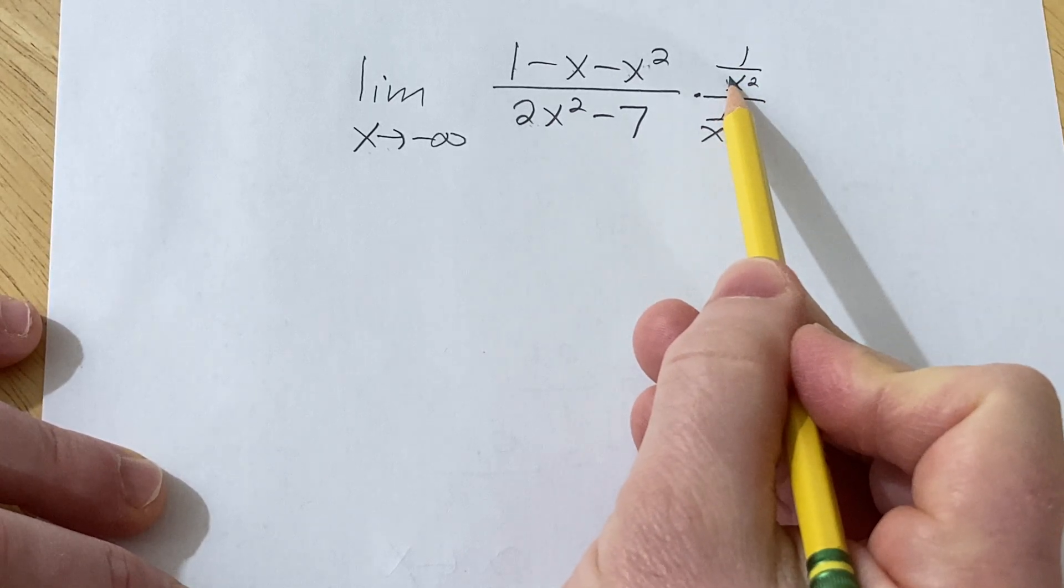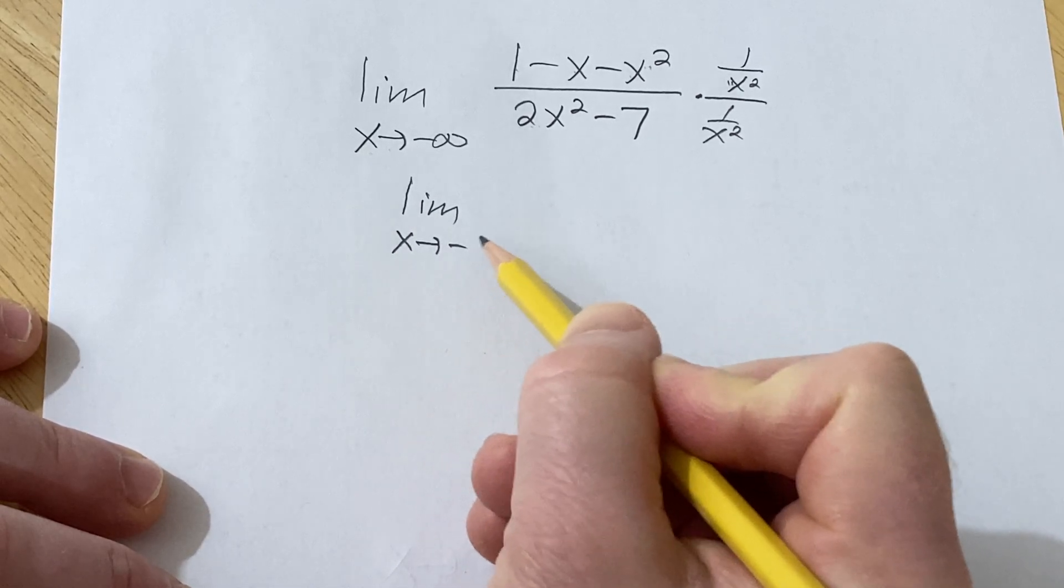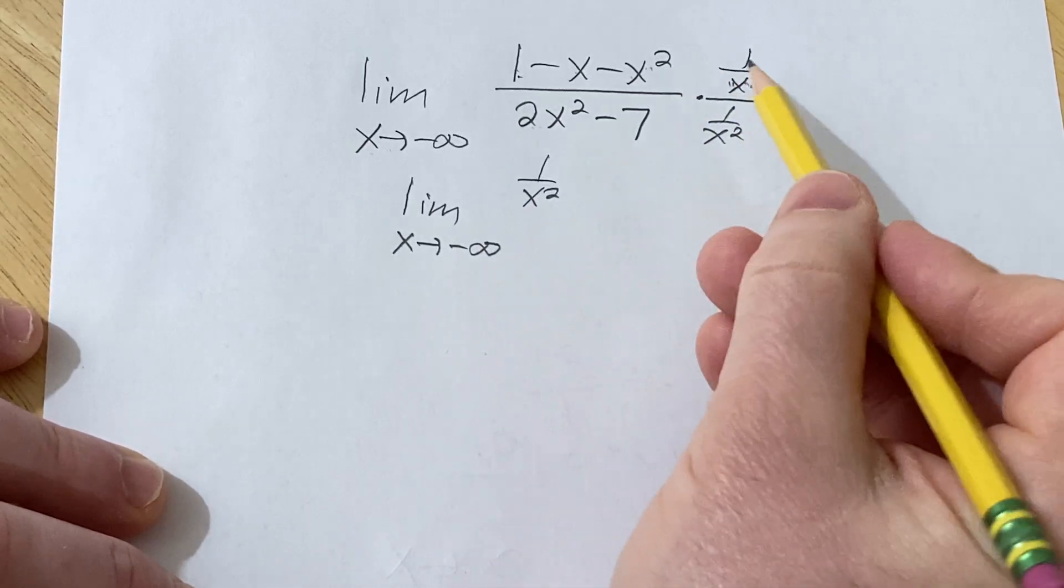When we do that, we're going to distribute this. So this is the limit as x approaches negative infinity. So 1 times this is just that, and then this times this.